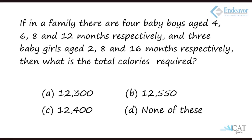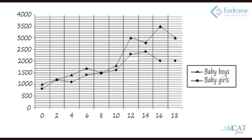Next question: if there are four baby boys aged 4, 6, 8, and 12 months and three baby girls aged 2, 8, and 16 months, what is the total calories required? At four months the triangle is one notch below 1500, so it's 1400. At six months it is two notches above 1500, so 1700. At eight months it is exactly 1500. At twelve months it is at 3000. So total for boys: 1400 + 1700 + 1500 + 3000.